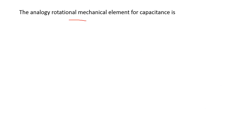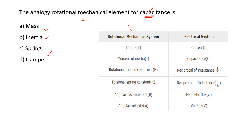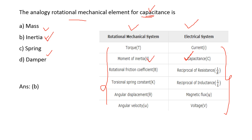Next: the analogous rotational mechanical element for capacitance is — options are: mass, inertia, spring, damper. Capacitance is the electrical element; you need to find its analogy in the rotational mechanical system. From the analogy table, capacitance corresponds to moment of inertia. So option B is the right answer. You must remember this tabular column for these types of questions.